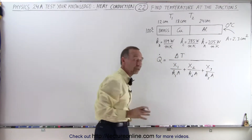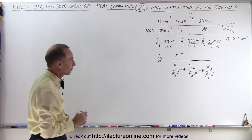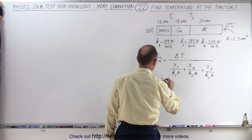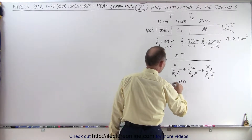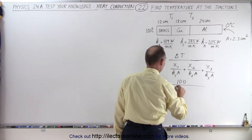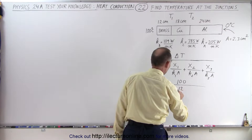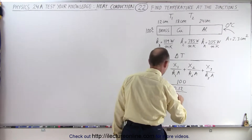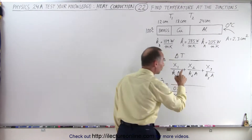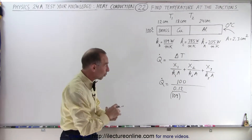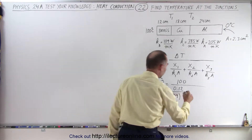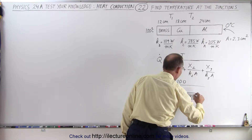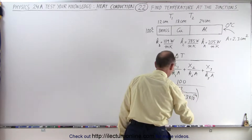x1, x2, and x3 are the lengths of each of the three sections. Plugging in the numbers, Q-dot is equal to a total of 100 in the numerator, divided by: x1 is 0.12 divided by k1 which is 109, times the cross-sectional area of 2.3 centimeters squared, converted to meters squared as 2.3 times 10 to the minus 4.